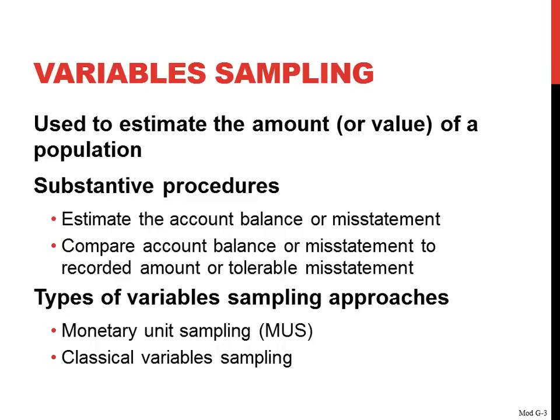So we talked about internal controls and we talked about attribute sampling. So variable sampling, as I said, is used to estimate the amount or the value of a population. It is related to our substantive procedures that we perform — substantive procedures related to testing account balances, such as estimating the account balance or a misstatement.